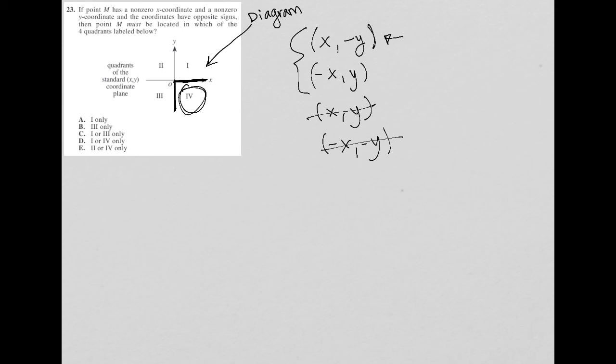And then for option two, if X is negative, that puts us over here, but Y is positive, and so Y value would be up here. That puts us in quadrant two.